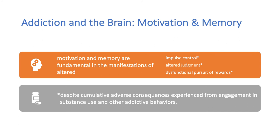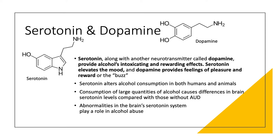Changes in motivation and memory due to frequent alcohol use alter impulse control and judgment, resulting in a dysfunctional pursuit of rewards. People with alcohol use disorder, despite repeated negative events, continue to use alcohol to achieve the effects they are seeking. Serotonin has receptors on nerve cells that convert chemical signals into functional changes in nerve pathways. Along with dopamine, serotonin provides alcohol's intoxicating and rewarding effects — serotonin elevates mood, and dopamine provides feelings of pleasure and reward.